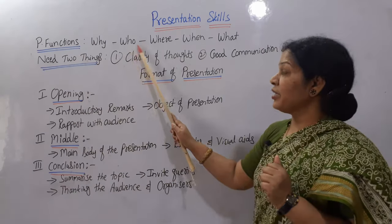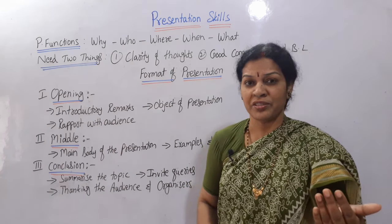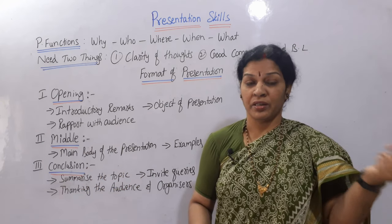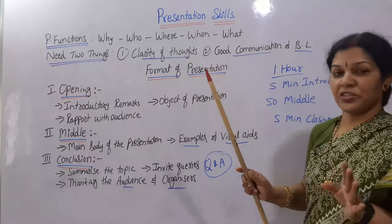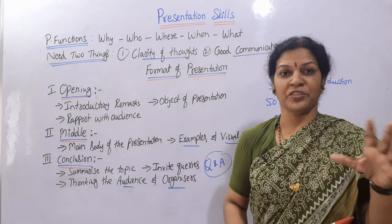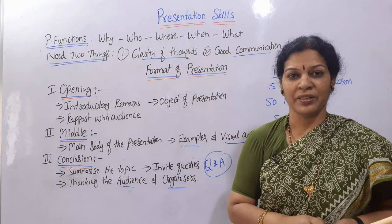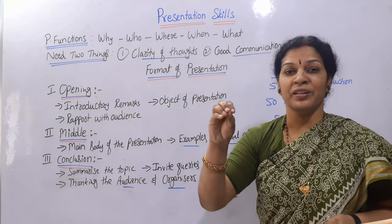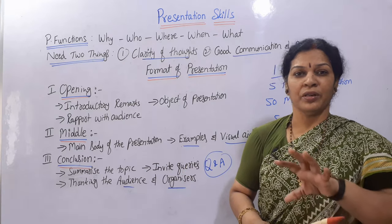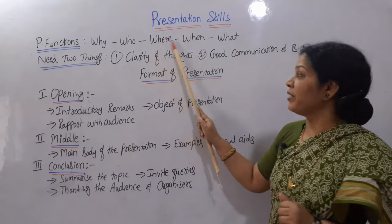Second is 'Who' — who are your audience? Are they school children, college students, employees, or normal people like at a political gathering? Sometimes your audience may be students, co-friends, faculty members, or a principal when you've done a project. Sometimes your audience may be normal people at a political gathering. So 'Who is your audience?' is very important.